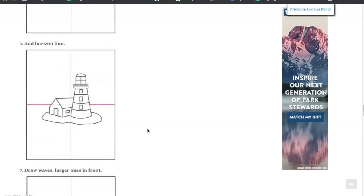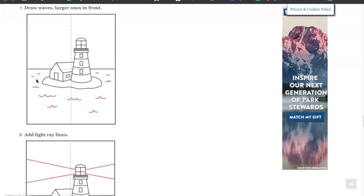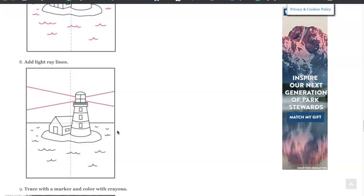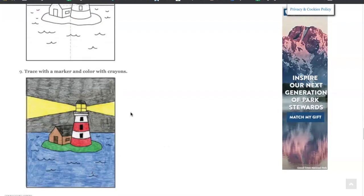Step six: add the horizon line across the middle of your paper. Step seven: draw the waves with smaller ones in the back and bigger ones in the front. Step eight: draw the rays of light that come out of the lighthouse. Step nine: trace everything and color it as you see fit. That is how you draw a lighthouse.